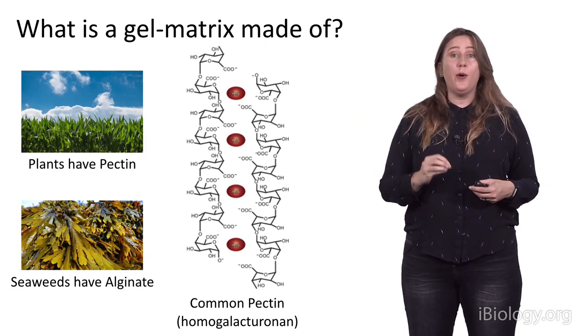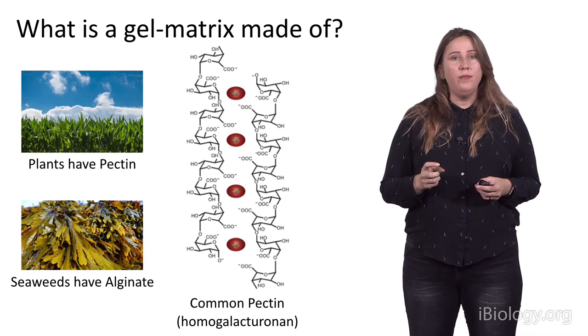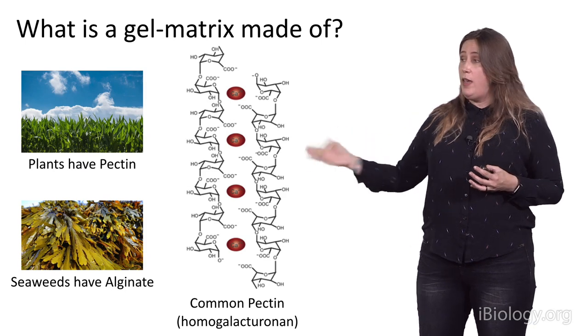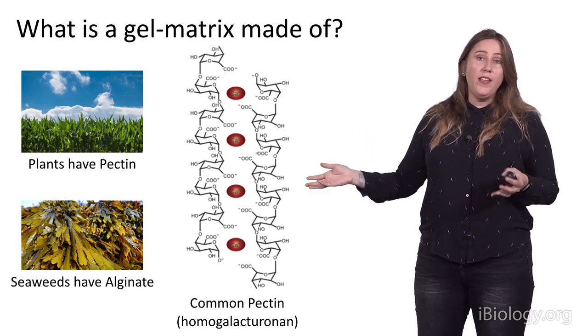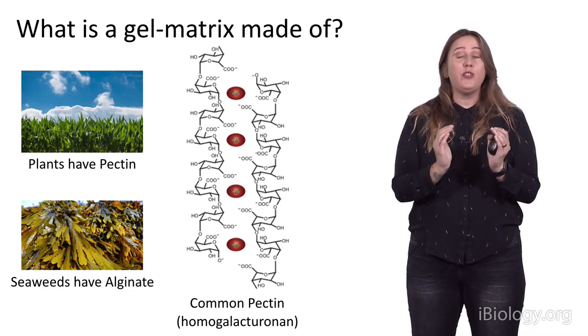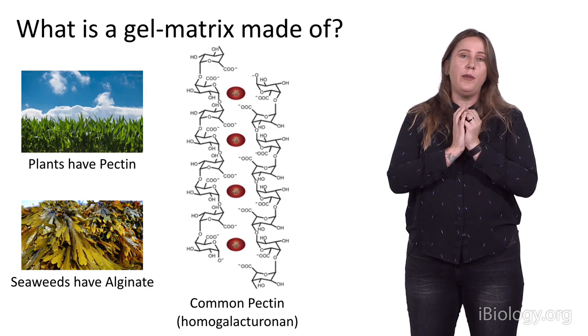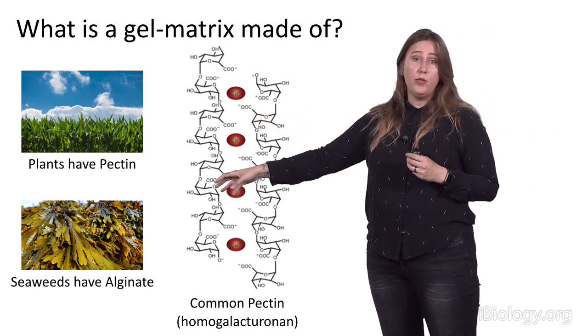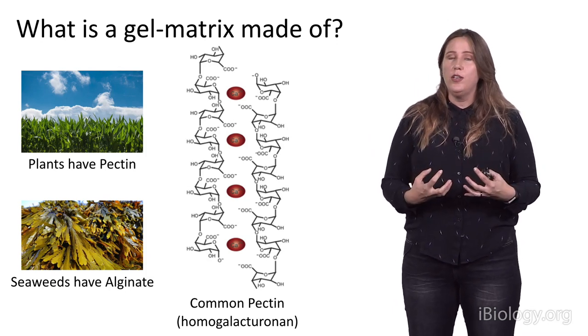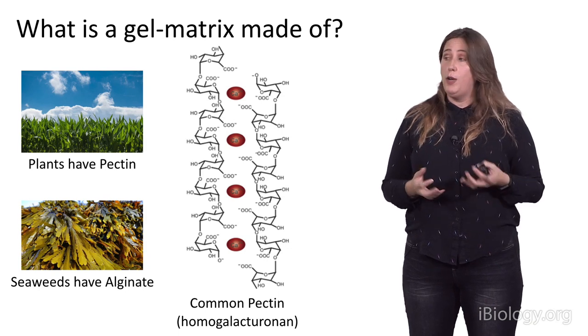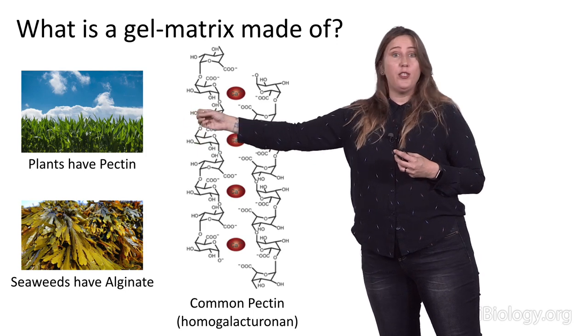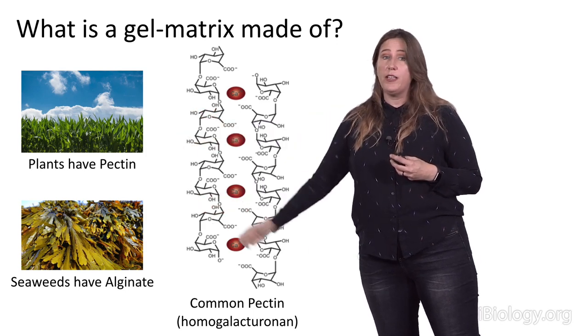Okay. So, pectin gels, but so does alginate. Now, the polysaccharides that make up alginate are different than those that make up, for example, homogalacturonan. Nonetheless, they still have a really similar structural property in that they create little pockets, which between chains can cross-link calcium. So, we have two incredibly evolutionary distinct groups, both of which have calcium cross-linked gels that we believe are essential to their cell walls function in regulating cell growth. And we're going to talk about both of those a little bit more in part two with respect to plants, and part three with respect to seaweeds.